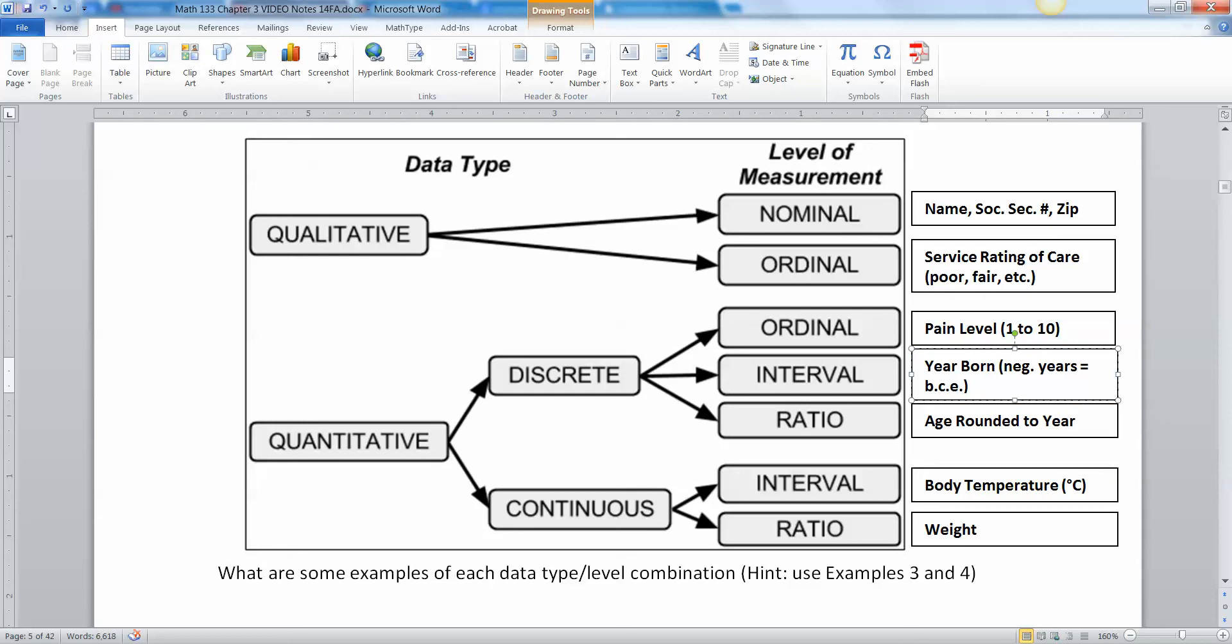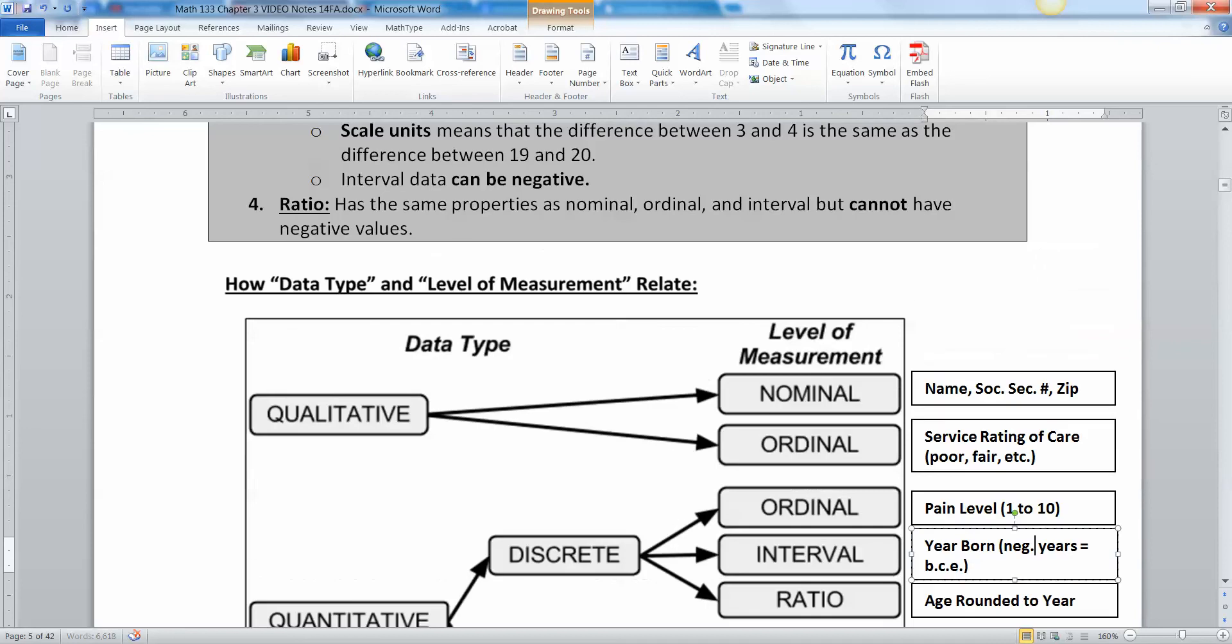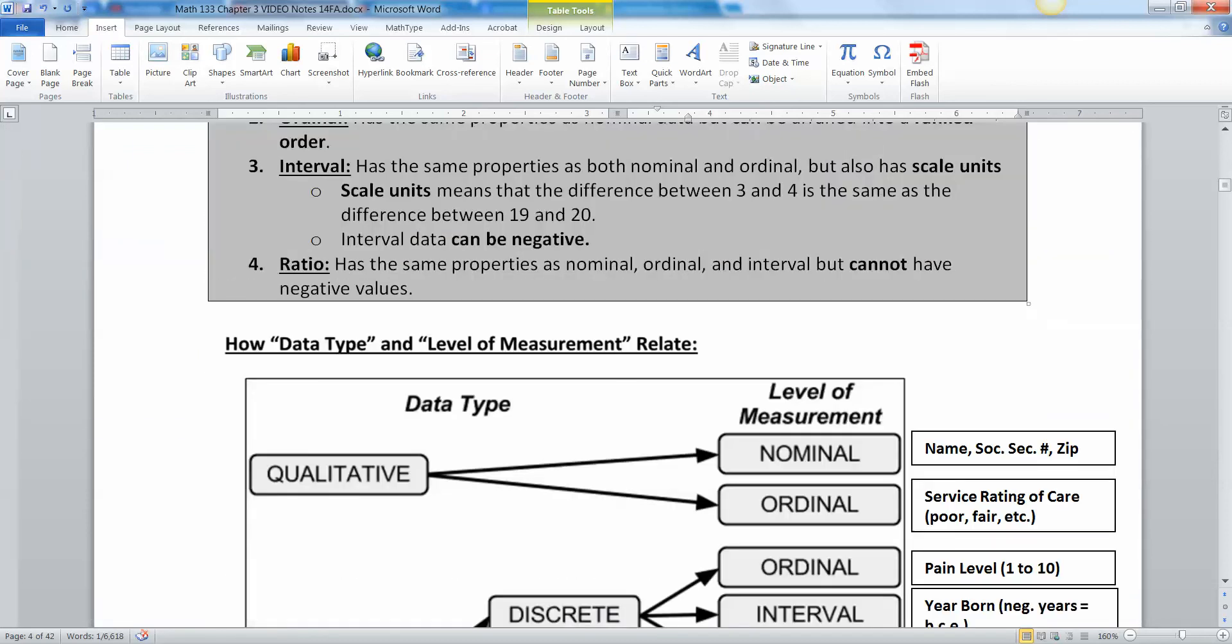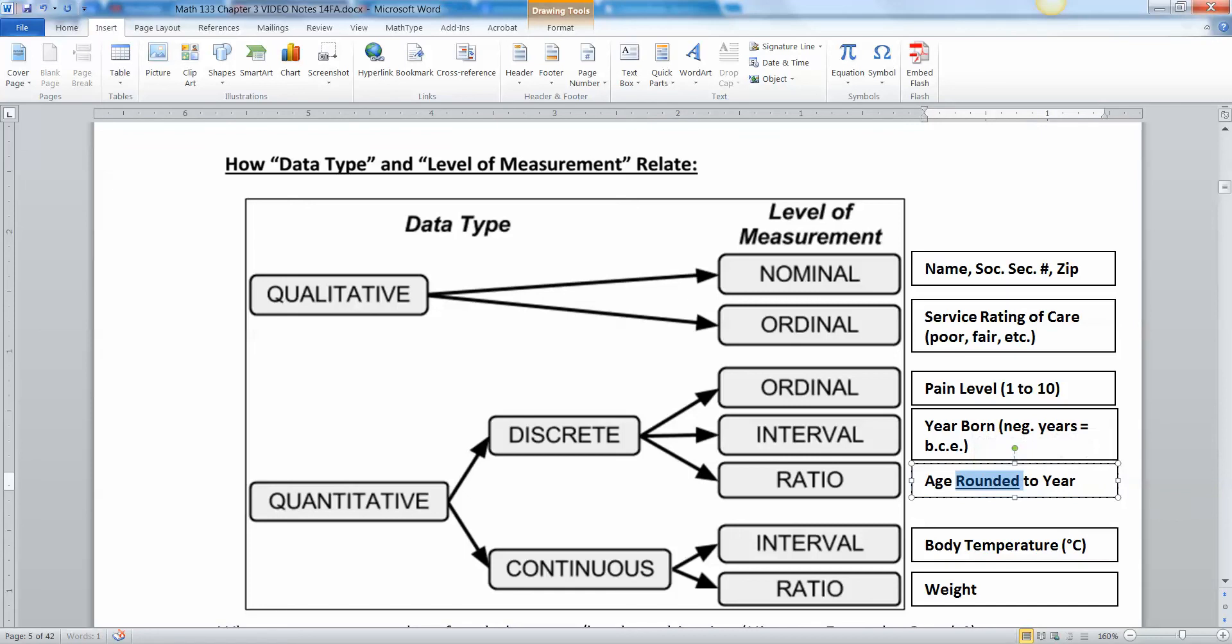Okay, ratio is your age rounded to the nearest year—that's discrete. Now age in general is continuous. Your age is constantly changing because you're getting older every second. That's morbid, but in general we round it. You don't say I'm 20 years and three months and two days. You say I'm 20 years old. So if you consider rounded age, that is discrete because you've rounded it, and it's ratio because you can't be negative.